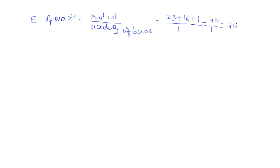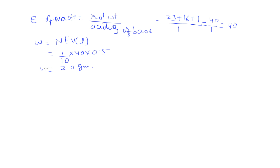So equivalent weight of NaOH is 40. Now W = N*E*V: normality is 1/10, equivalent weight is 40, and volume is 0.5 liters. By solving these values we get 2.0 grams. So the answer is 2.0 grams of NaOH are required to prepare 500 ml N/10 solution.